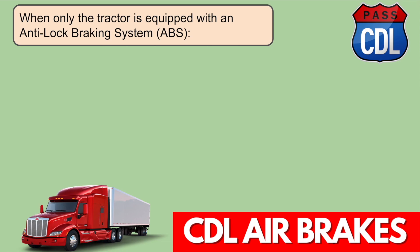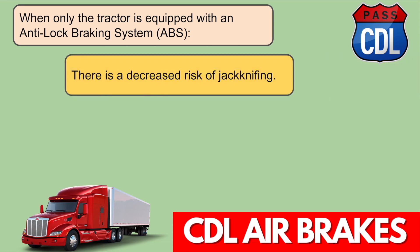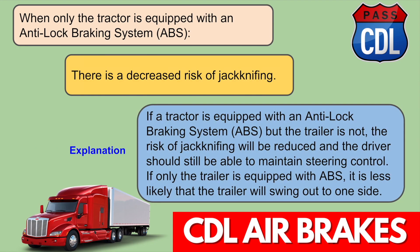When only the tractor is equipped with an anti-lock braking system (ABS), there is a decreased risk of jackknifing. If a tractor has ABS but the trailer does not, the risk of jackknifing will be reduced and the driver should be able to maintain steering control. If only the trailer is equipped with ABS, it is less likely that the trailer will swing out to one side.